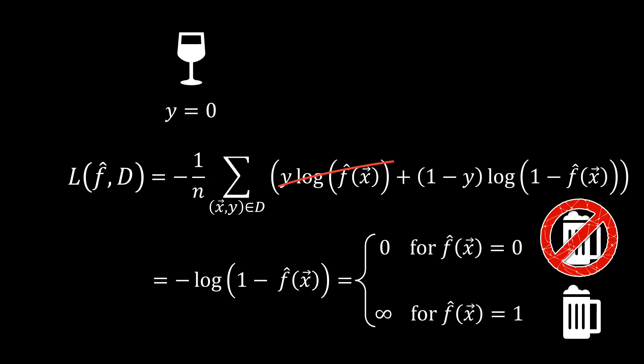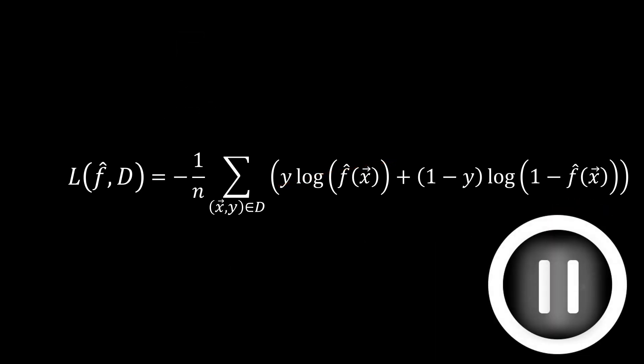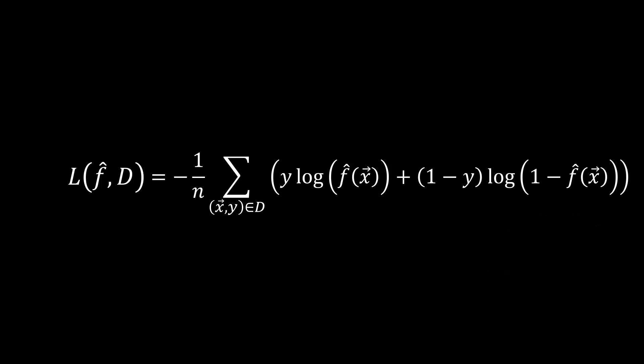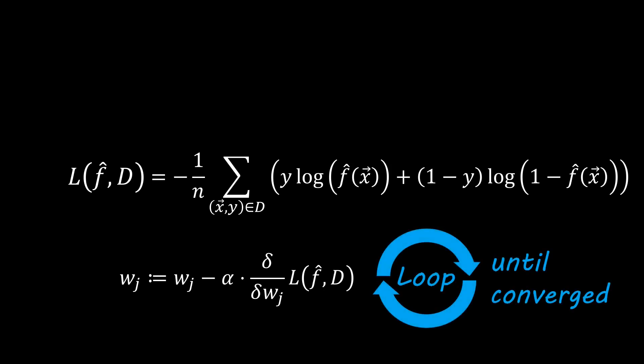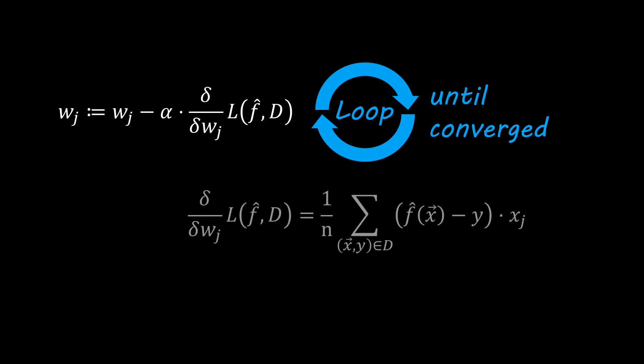The question now is how to find the optimal weights based on this loss. Unfortunately, there is in general no closed-form solution for logistic regression. However, we can differentiate the loss with respect to the weights and use gradient descent. Gradient descent can iteratively improve our estimate until a local optimum is reached. We note that for the sigmoid squashing function, the gradient with respect to the weights turns out to have a relatively simple structure, given by this formula.